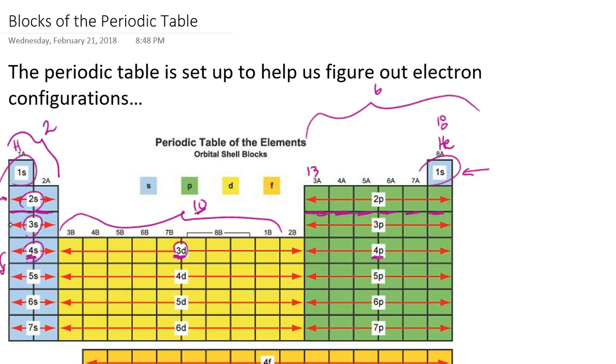Similarly, if I go to the next period, the 5S will fill, but then the corresponding D sublevel that fills in that same period actually is one principal quantum number behind, so that's the 4D sublevel that's filling. As I move from the beginning of the transition metals to the end, and then once I'm through with the 4D sublevel and move into the corresponding P sublevel in the fifth period, then I jump back up to the 5P, and that 5P sublevel will fill, and then so on going down the periods.